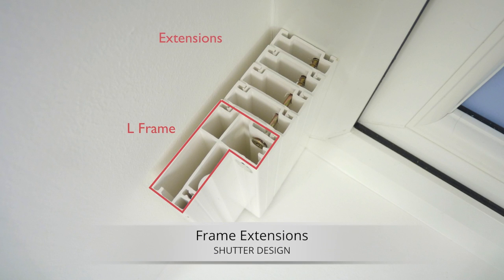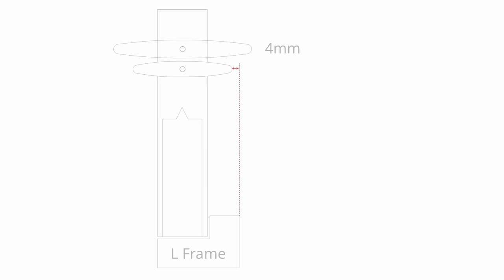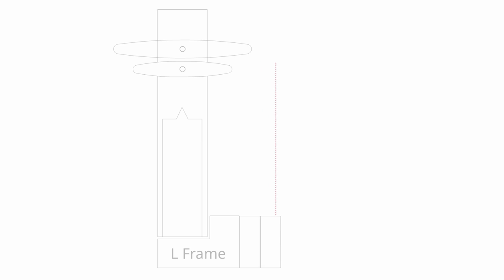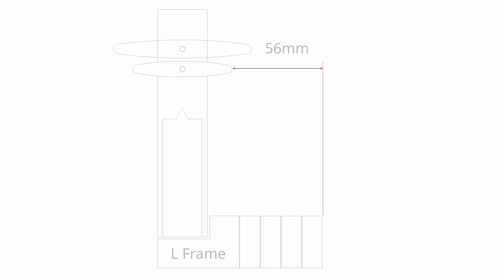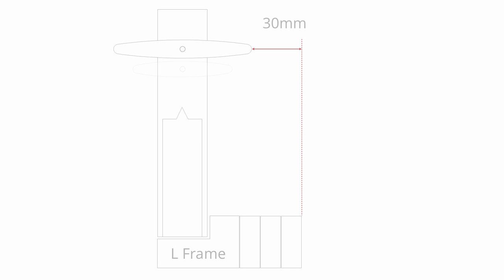Frame extensions are provided to increase the depth of a standard shutter frame. They provide extra clearance between the back of the frame and back of the louver. This is important if you're fixing back to the window frame, because you don't want the louvers hitting the window or any handles. The 64mm louver blade has 4mm clearance. With each extension you gain 13mm, so one extension provides 17mm clearance, two extensions gives 30mm, three extensions 43mm, and four extensions 56mm of clearance. The large 89mm louver needs one extension as standard, giving 4mm of clearance. With two extensions you get 17mm, three extensions 30mm, and four extensions 43mm clearance.